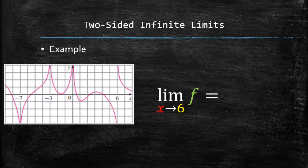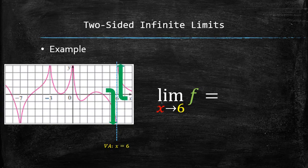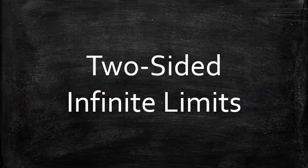Finally, to find the last limit, we need to determine whether the function goes up or down from both sides of the asymptote x equals 6. It is easy to see that the function approaches negative infinity from the left and positive infinity from the right. Since the two one-sided limits are not matching, we say that the two-sided limit doesn't exist. We discussed the definitions of two-sided infinite limits using the graphing approach.